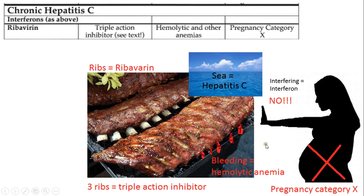Ribavirin is pregnancy category X — absolutely do not use; this will cause terrible things. The pregnant woman is saying no, and she's also interfering with the cooking of the ribs by saying no, because this is an X — do not use in pregnancy. The C next to it may also help remember hepatitis C.